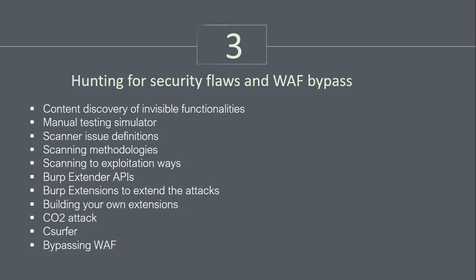Module 3 will start hunting for security flaws and bypassing web application firewalls. In this module, the Burp Suite Professional version scanner will be used. We will also cover Burp Suite Extender APIs, showing how you can extend and make your own extensions and testing tools inside Burp Suite using Python, Java, and Ruby programming languages. Apart from that, we will also use the CO2 extension, CSurfer for cross-site request forgery, and the Burp Suite firewall bypass.